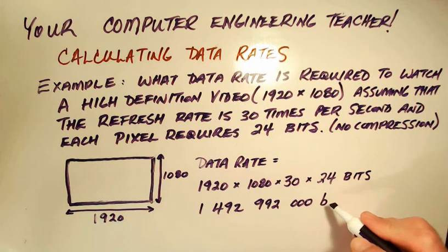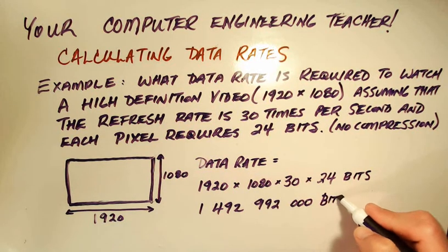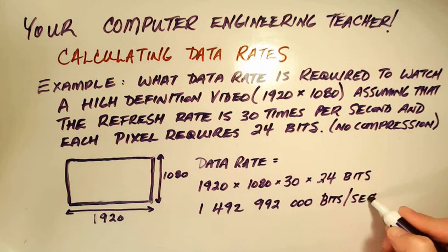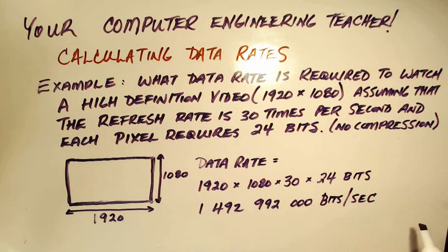We're going to need to have this many bits transferred per second. So this number here we're actually going to divide by a billion, and that will change it to gigabits per second.